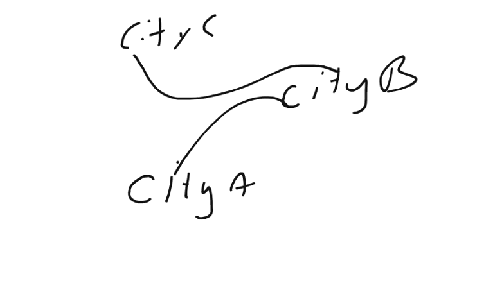Next it flies for 150 kilometers 20 degrees west of north to City B. Finally, the plane flies 190 kilometers due west to City C. Find the location of City C relative to the location of the starting point.